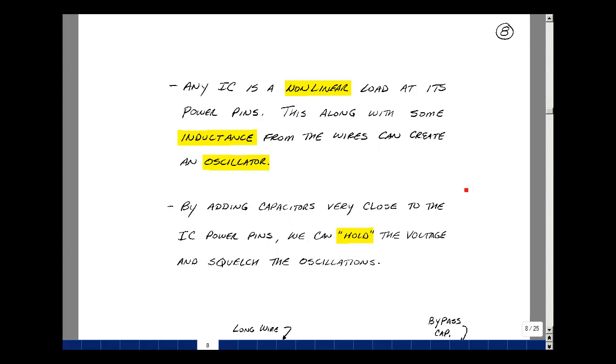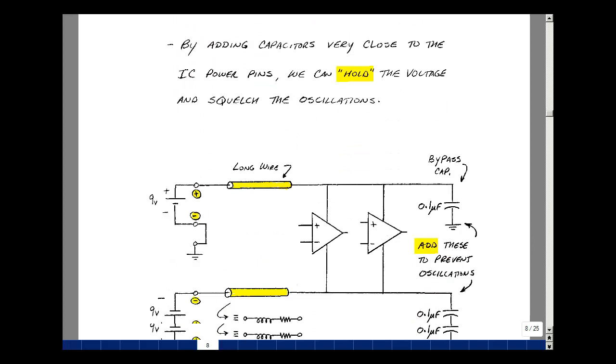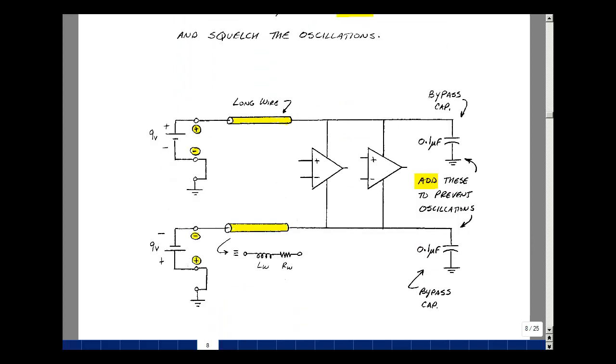Remember from ECE 201 that the voltage across the capacitor doesn't want to change instantaneously so we're going to use that fact to fix up this problem. So here I've got my power and I've got some wire between the power and my integrated circuit. This is particularly troublesome when you have like an automobile where you've got a long cable between the power and the car and electronics get hooked up to it. We're going to put a capacitor very close to the pins of the op-amp back to ground about 0.1 microfarad and this is going to squelch or suppress the oscillations.